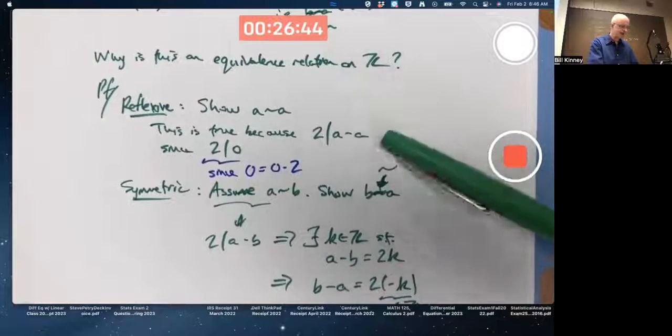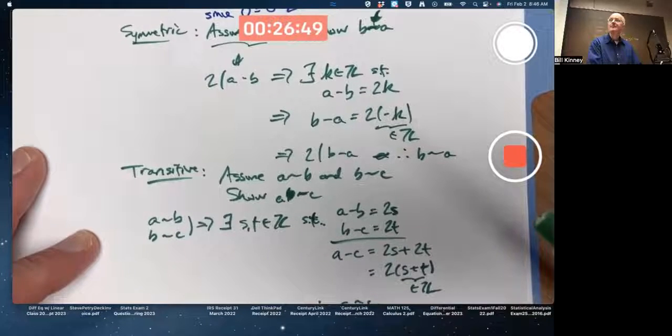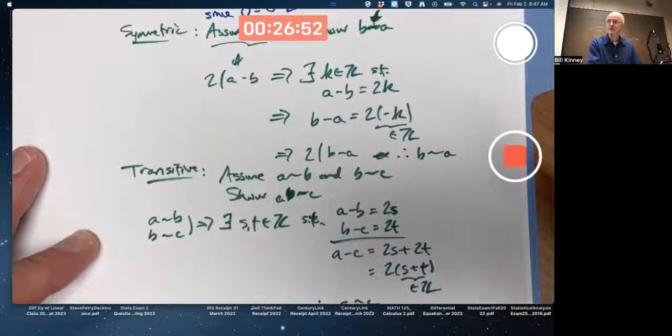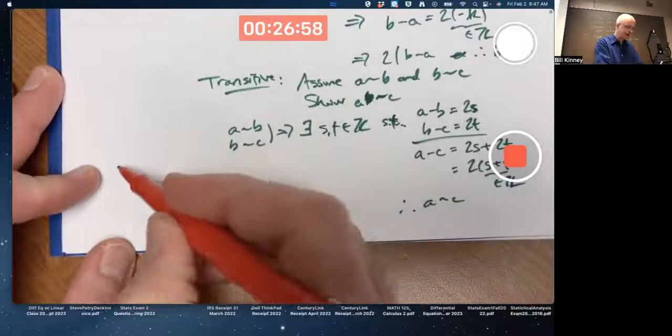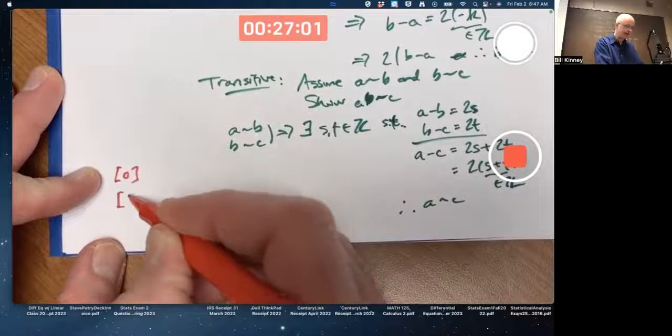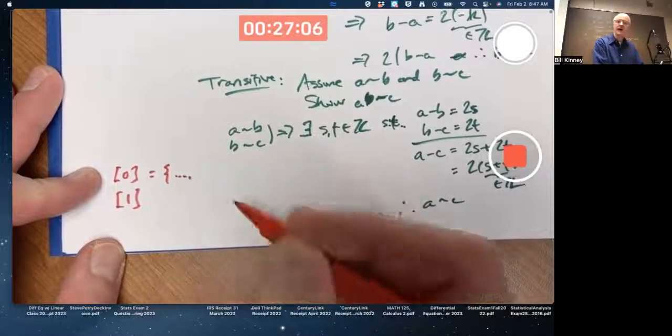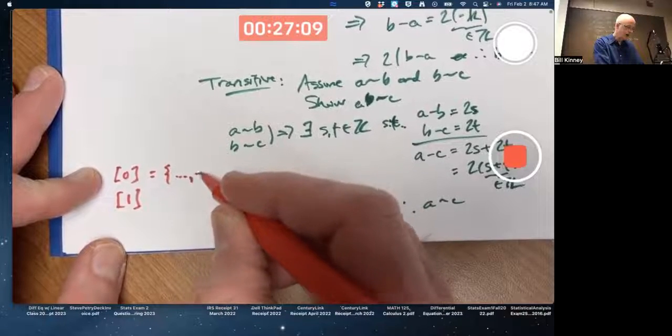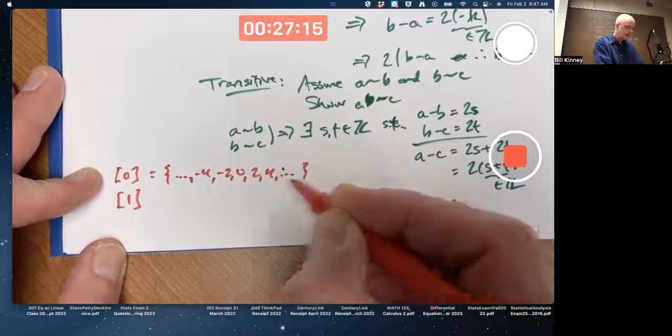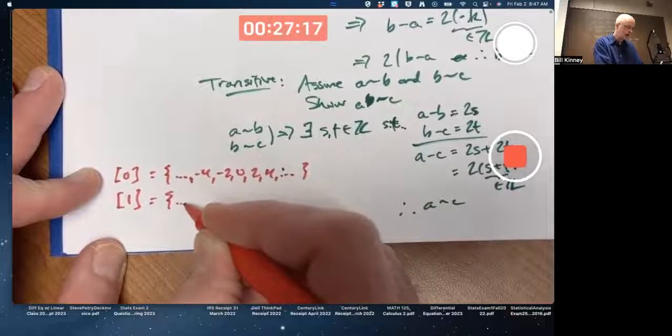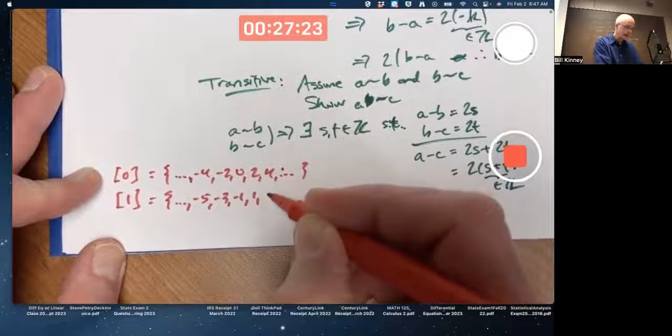This equivalence relation, it is one because it satisfies the reflexive, symmetric, and transitive properties. This is the kind of thing you need to do to prove it's an equivalence relation. It generates what's called a partition of the integers into two equivalence classes. The equivalence class containing zero and the equivalence class containing one. The one containing zero are all the numbers that are equivalent to zero, which are all the even numbers. Those are all the numbers such that if you subtract zero, you get an even number. And the equivalence class containing one is all the odd numbers because these are all the numbers that if you subtract one, you get an even number.